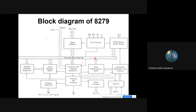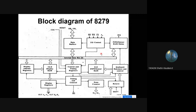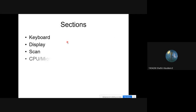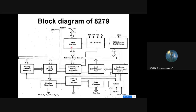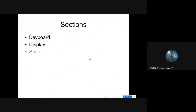This is the internal architecture and block diagram of 8279. This architecture contains four sections: the keyboard section, display section, scan section, and CPU/microprocessor interface section. The data buffer is in the CPU interface section. The FIFO, sensor, and keyboard debounce and control are in the keyboard section. The display registers are in the display section, and the scan counter is in the scan section.